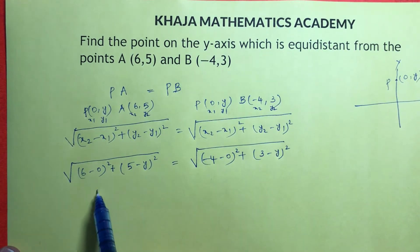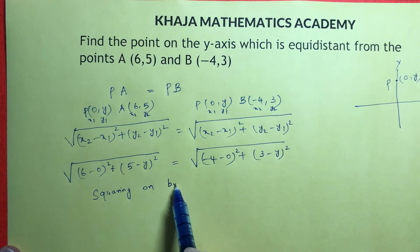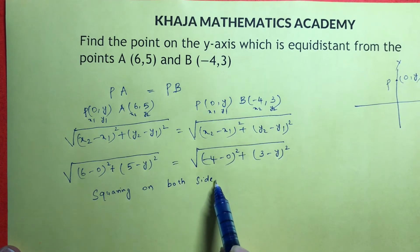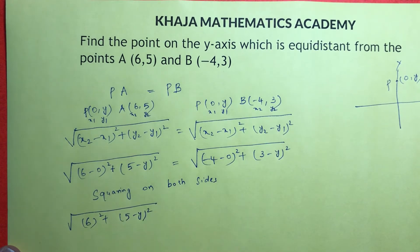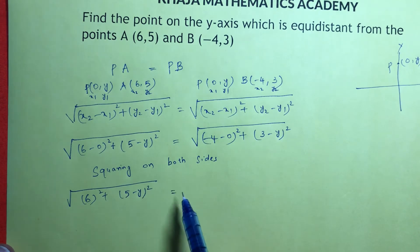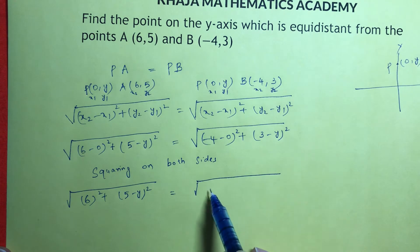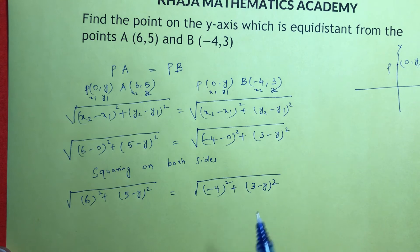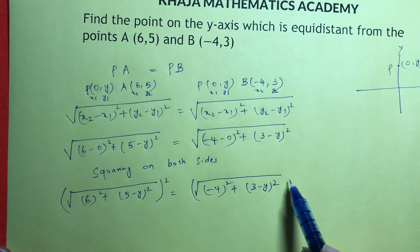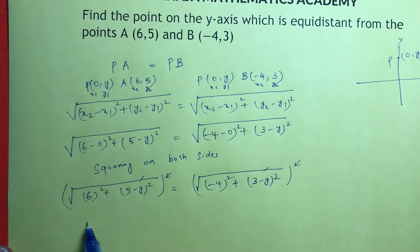Now to solve this, squaring on both sides. √[6² + (5 - y)²] = √[(-4)² + (3 - y)²]. Squaring on both sides, square and root will get cancelled. So 6² is 36.